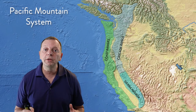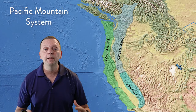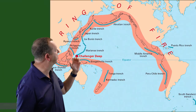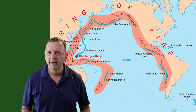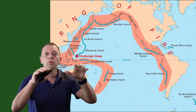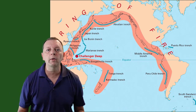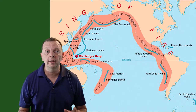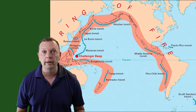Along the west coast of North America, we find what is known as the Pacific Mountain System. The Pacific Mountain System is North America's part of the Ring of Fire — not that Ring of Fire, this Ring of Fire. The Ring of Fire is the subduction zone that surrounds the Pacific Ocean, where we find 90% of all the world's earthquakes and 75% of the world's volcanoes.